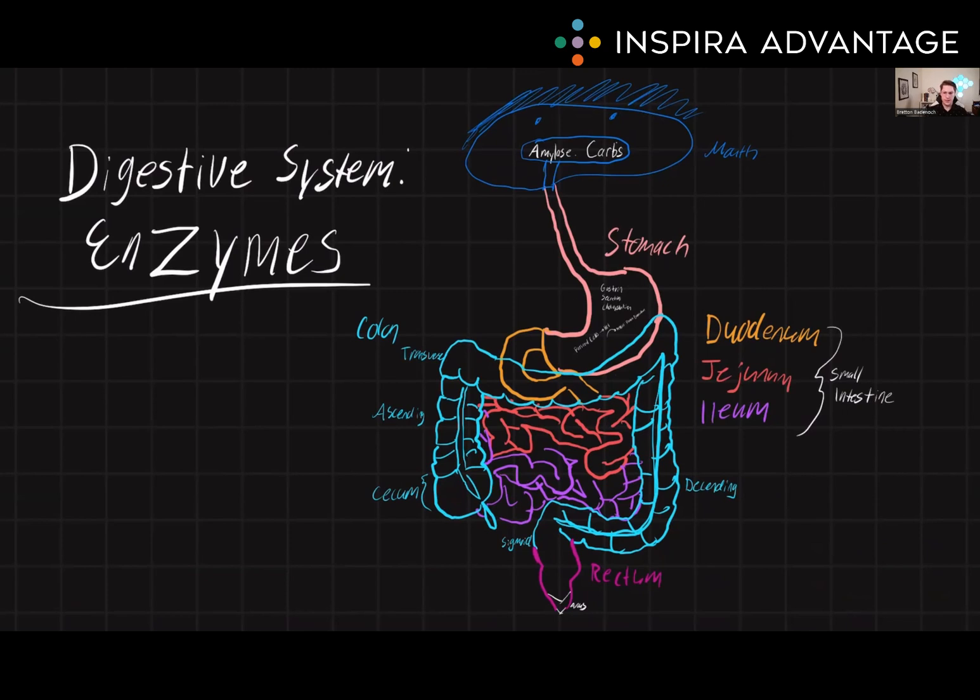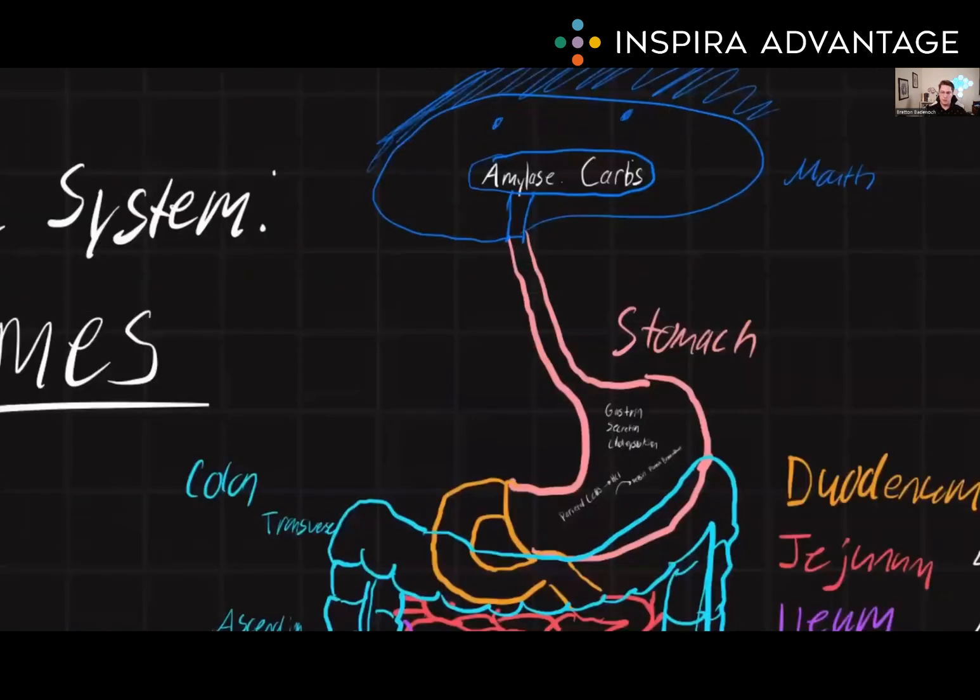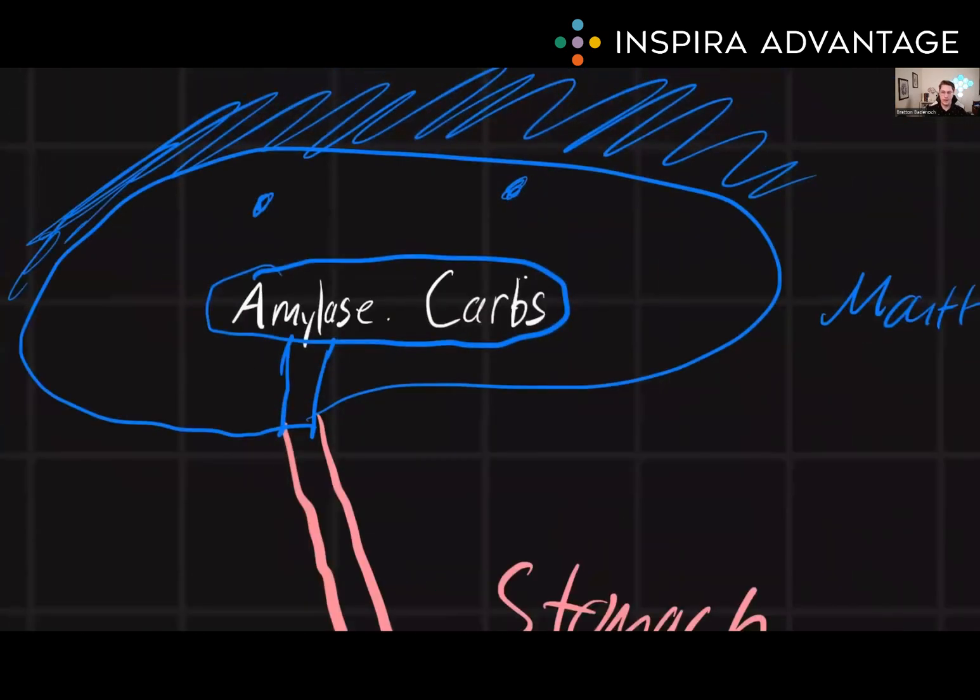The digestive process begins in the mouth, where the first step of mechanical and chemical digestion takes place. Mechanical digestion is done by the teeth, which physically breaks down the food into smaller pieces, while chemical digestion is done by enzymes in the saliva, such as amylase, which begins the breakdown of carbohydrate.